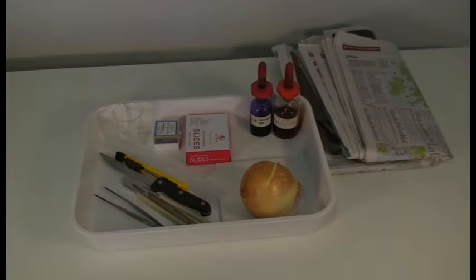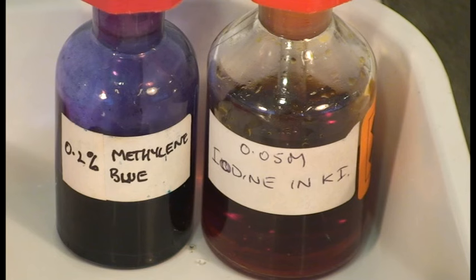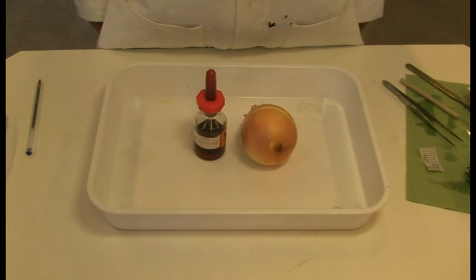An alternative approach is to directly stain your specimen. This time we will use iodine to stain some onion in order to view onion cells with the microscope.